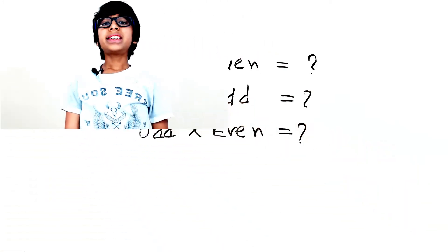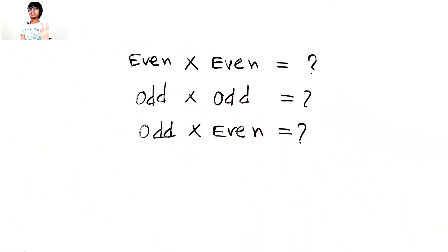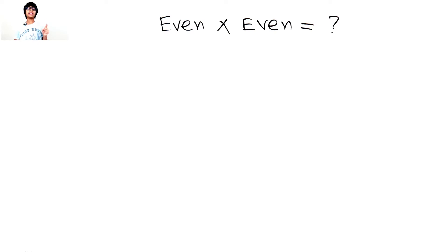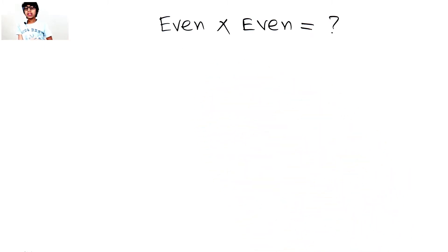Hi guys, in this video let's see an interesting fact about multiplication. If we multiply two even numbers, will we get an odd number or even number? If we multiply two odd numbers, will we get an odd number or even number? If we multiply one odd number and one even number, will we get an odd number or even number? Now let's see what we get if we multiply two even numbers.